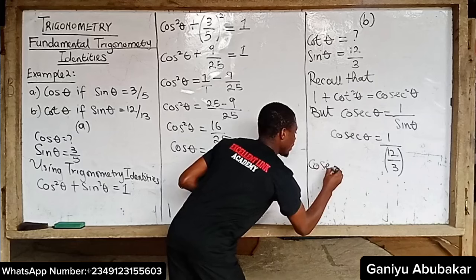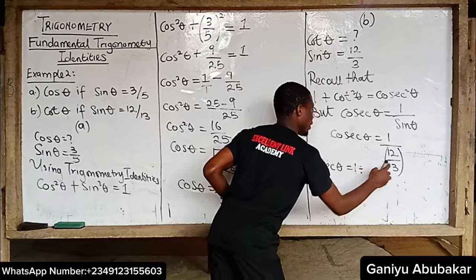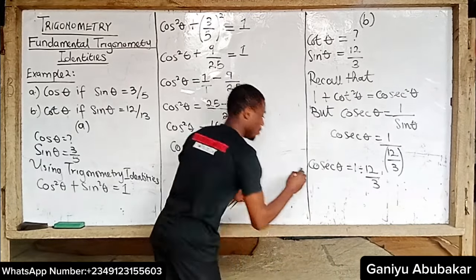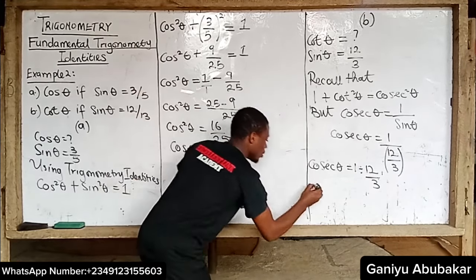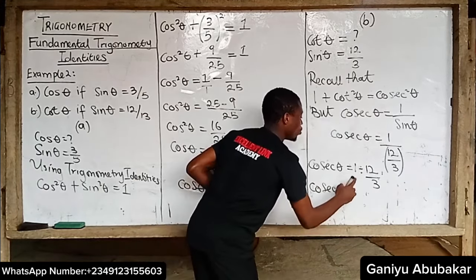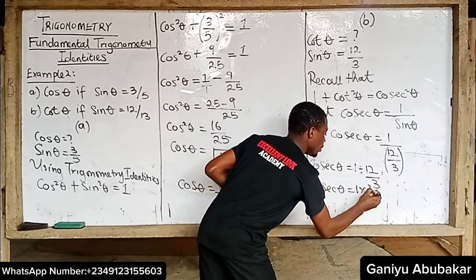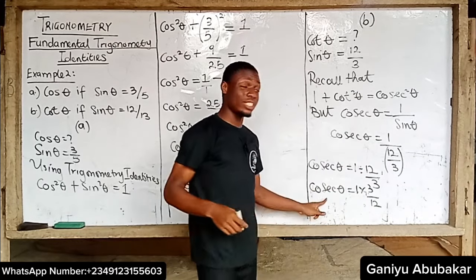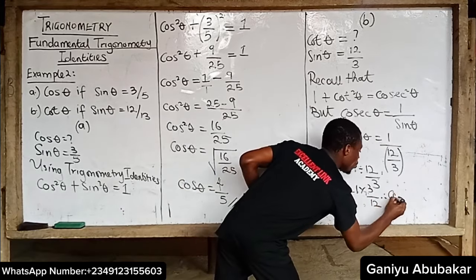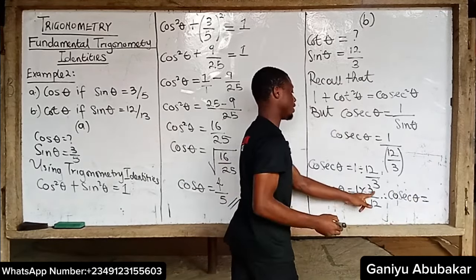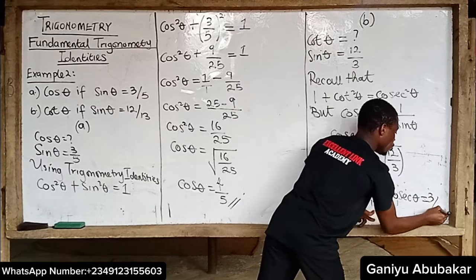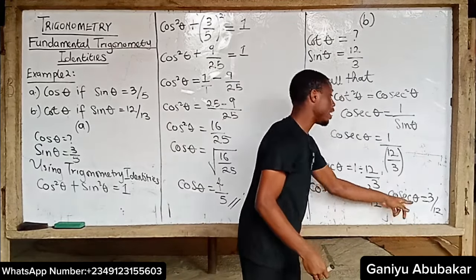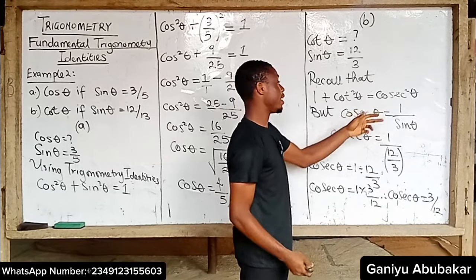I'll have csc theta equals 1 over sin theta, and sin theta has been given as 13 over 12 in the question. How do I get csc theta from here? I apply the concept of reciprocal of a fraction. So csc theta equals 1 divided by (13 over 12). Multiplying by inverting: csc theta equals 1 times 12 over 13, which gives 12 over 13. So the expression for csc theta is 12 over 13.